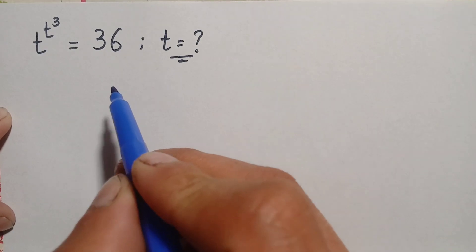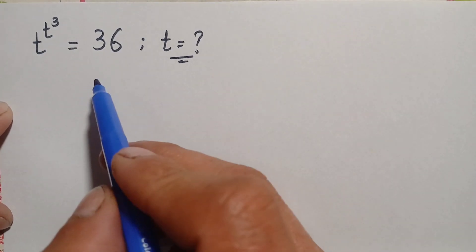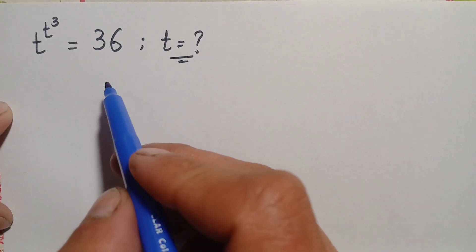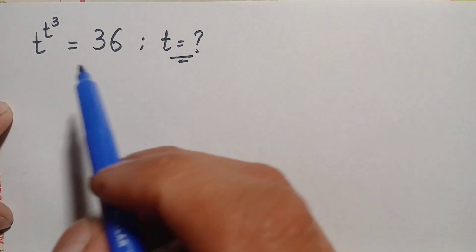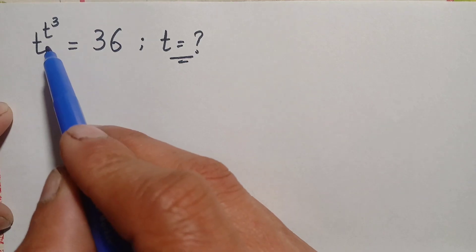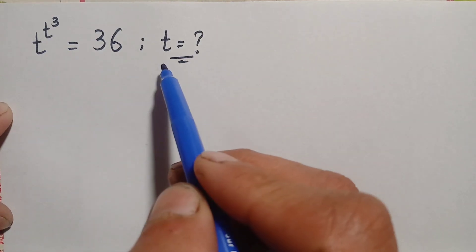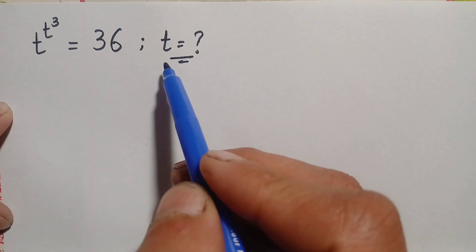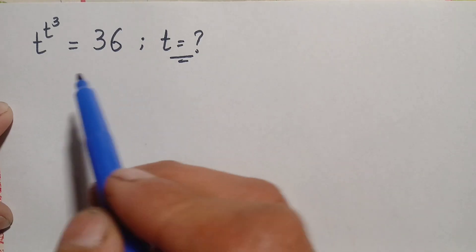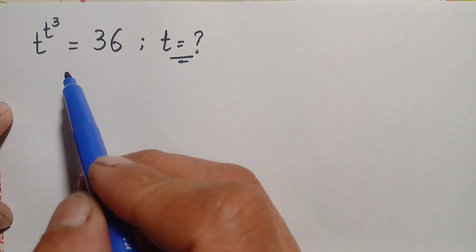Hello everyone, you are welcome to solve this interesting exponential math problem, which is t raised to power t cubed is equal to 36. Here we will try to find out the value of this unknown t. Now, how can we solve this math problem? First of all, we will make some suppositions.